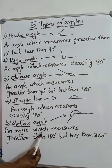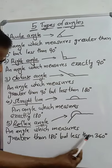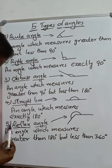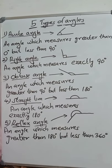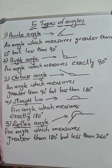And last, reflex angle — an angle which measures greater than 180 degrees but less than 360 degrees is called a reflex angle. For more videos, subscribe and support our channel.